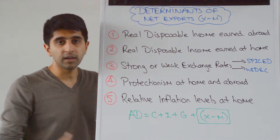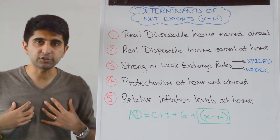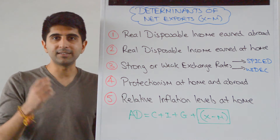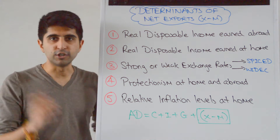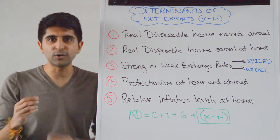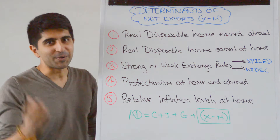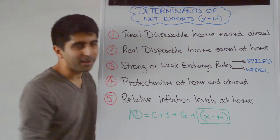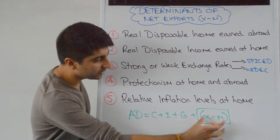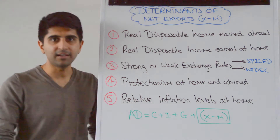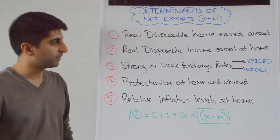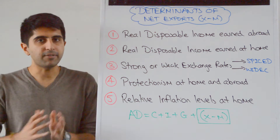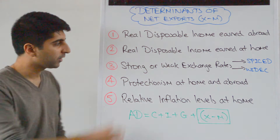However, if we get poorer — if there is a recession at home — the marginal propensity to import is going to reduce. We suck in less imports. Therefore the import expenditure is likely to fall, increasing the value of the bracket and shifting AD to the right, ceteris paribus. Of course, exchange rates have a massive influence on X minus M — strong exchange rates or weak exchange rates.